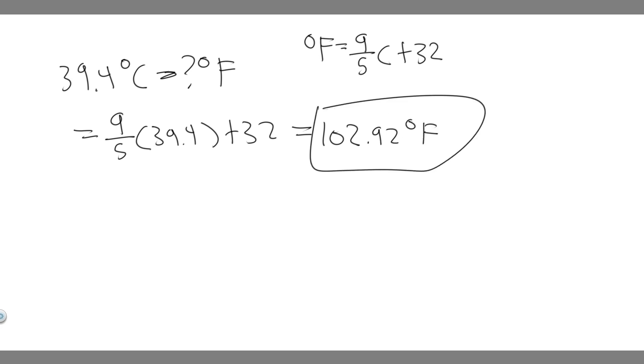So this right here is going to be your answer, so 102.92 degrees Fahrenheit, that's equal to 39.4 degrees Celsius. This is your answer, and hopefully you found this useful.